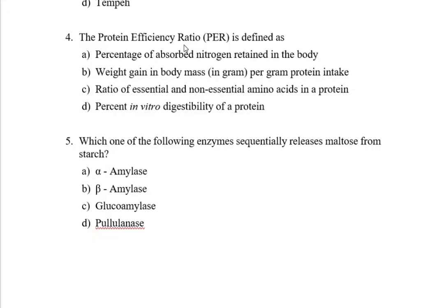Option A: percentage of absorbed nitrogen in the body. Option B: weight gain in body mass in grams per gram protein intake. Option C: ratio of essential and non-essential amino acids in a protein. And option D: percent in vitro digestibility of a protein. Here the correct answer is option B: weight gain in body mass per gram protein intake.